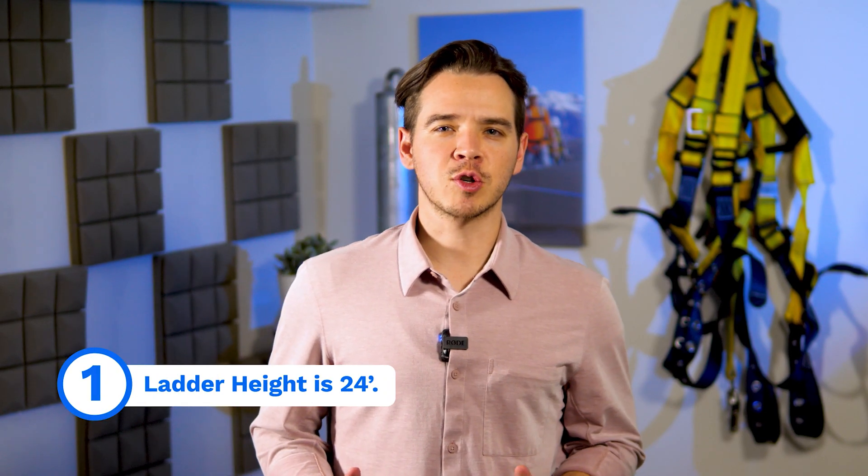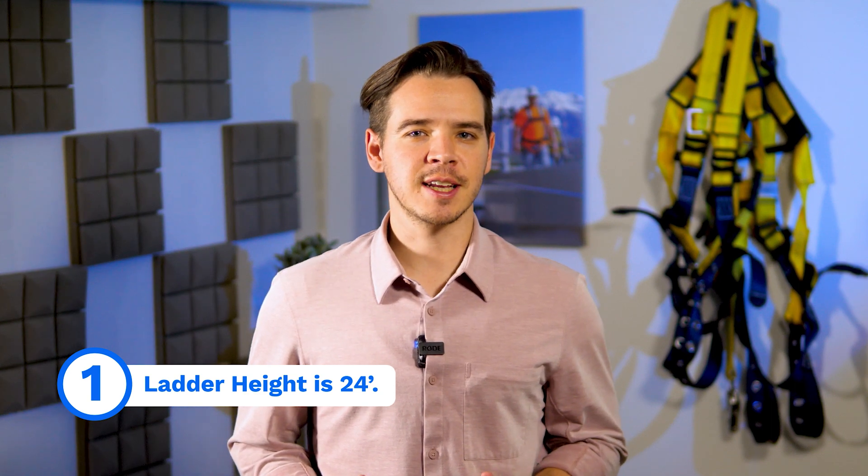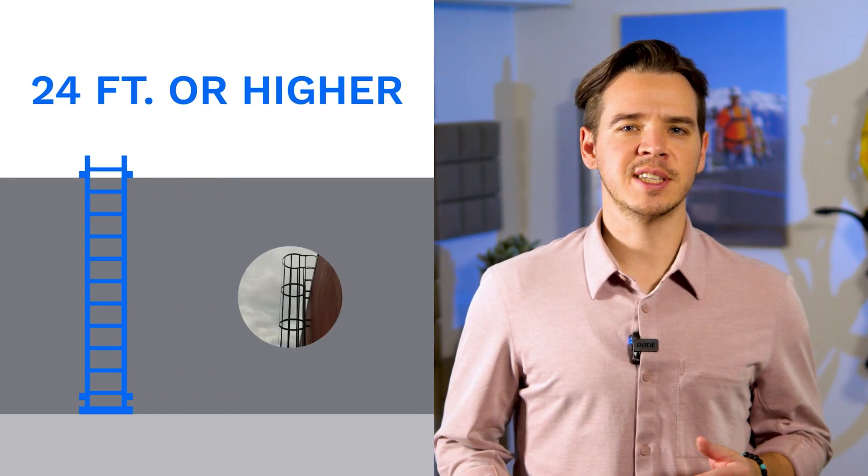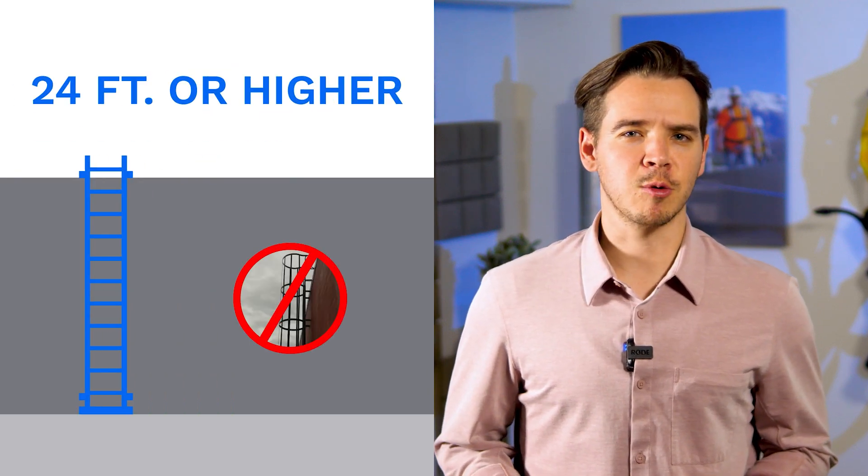Number one, ladder height is 24 feet. The easiest change to remember has to do with ladders that extend 24 feet or more above a lower level. Ladders that are 24 feet or higher can no longer use safety cages as a means of protecting workers.